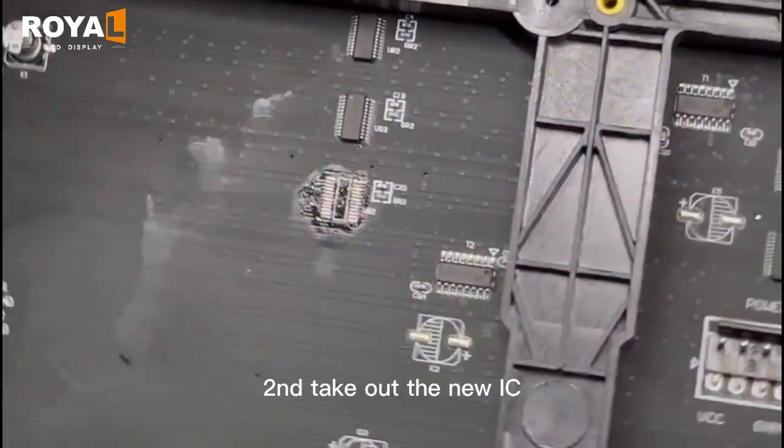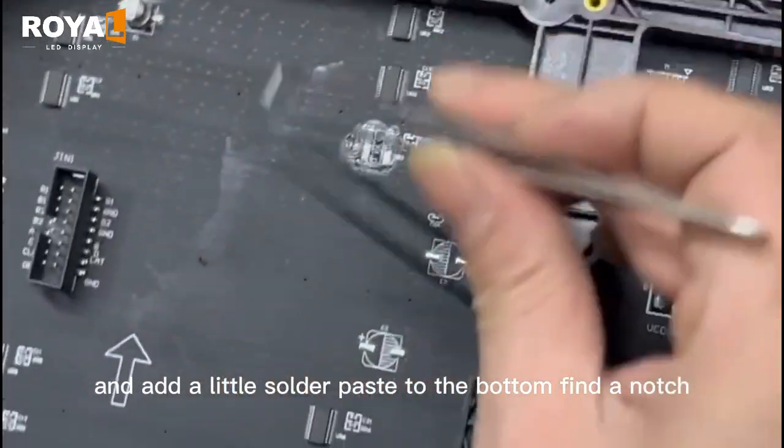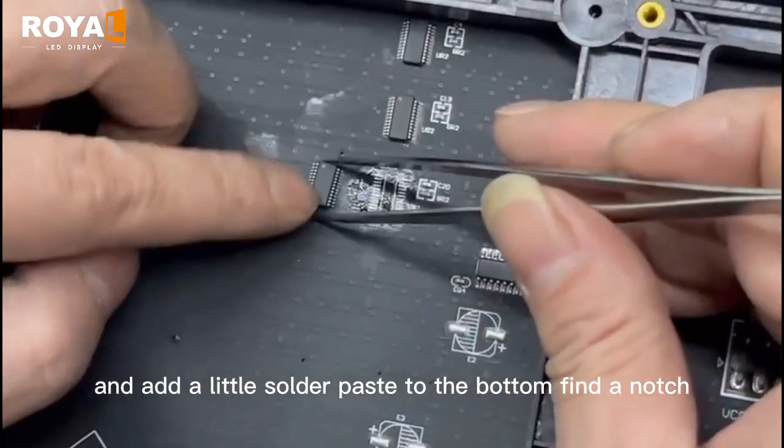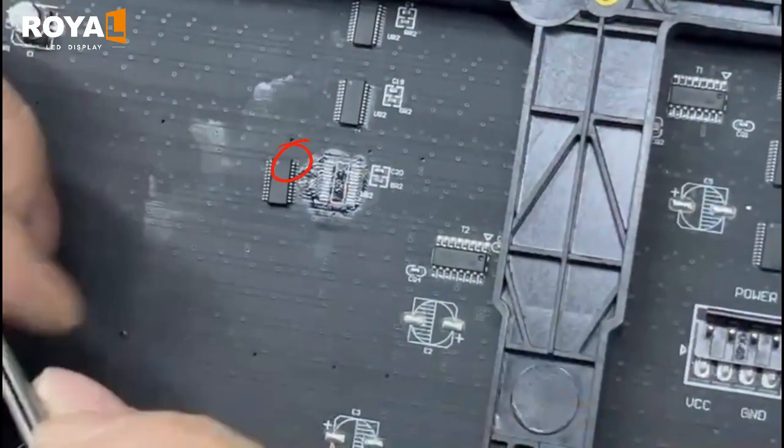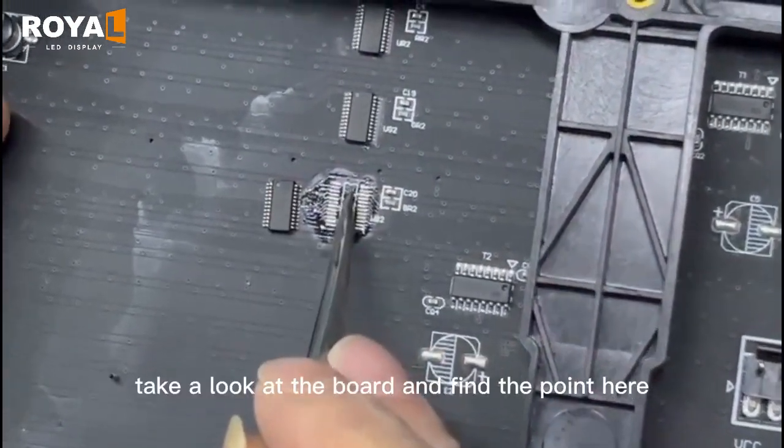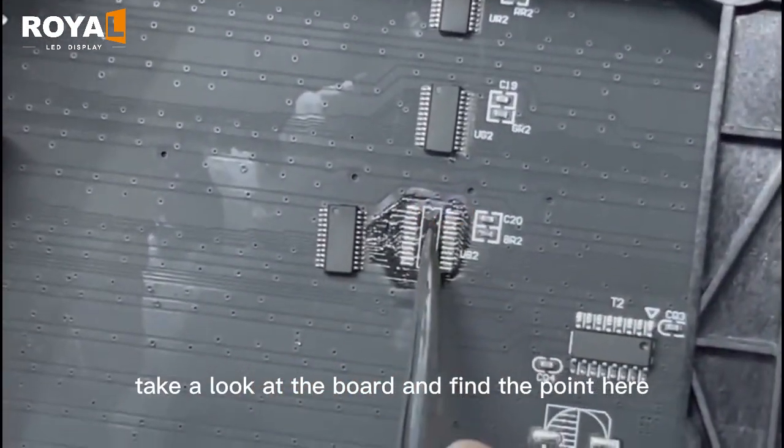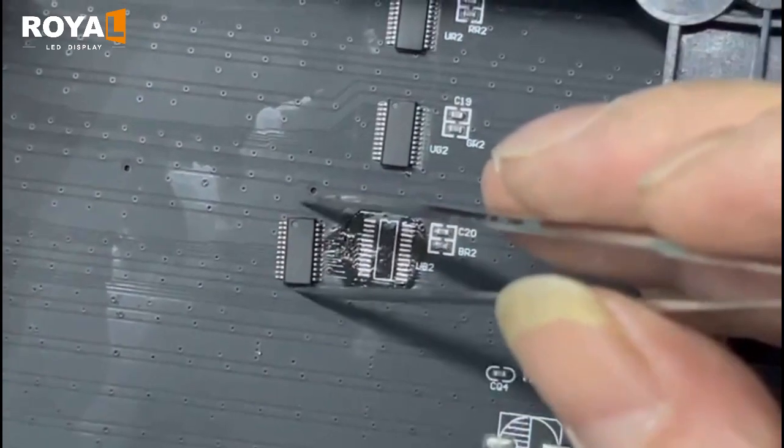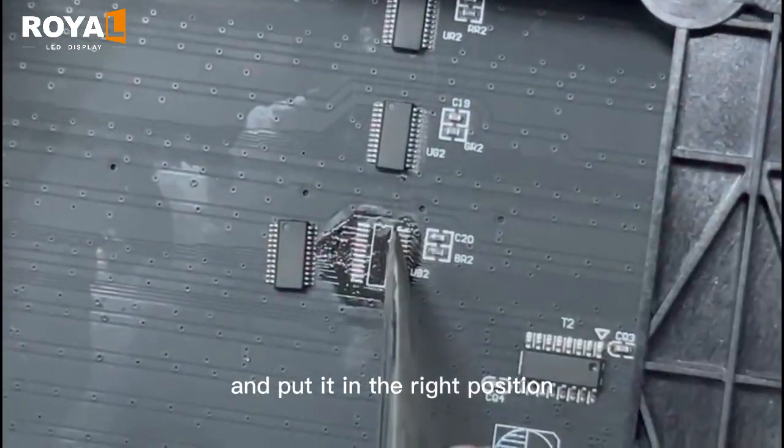Second, take out the new IC and add a little solder paste to the bottom. Find a notch, take a look at the board, and find the point here. Put it in the right position.